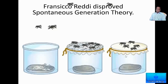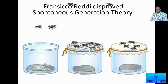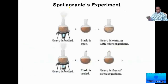But the results of Francisco Redi were not accepted by society. The believers of spontaneous origin of life commented that by closing the mouth of the jars, Redi was preventing some vital force — necessary for life to enter the jar — because of which life was prevented from originating spontaneously. The next experiment in this effort to disprove the theory of spontaneous origin of life was done by Spallanzani.